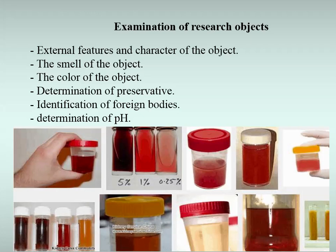Determination of pH of biological material has great importance for the detection of toxic substances. By setting the pH, the volume of the chemical toxicological analyses can be shortened or expanded. The pH of biological material is usually determined by various indicators. A universal indicator paper is considered superior to filter paper impregnated with litmus, phenolphthalein, and connoftalane solutions.